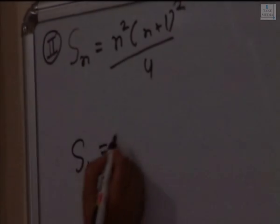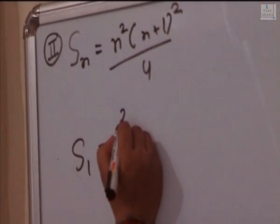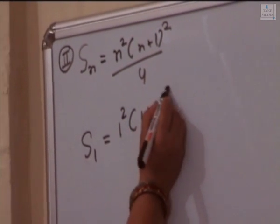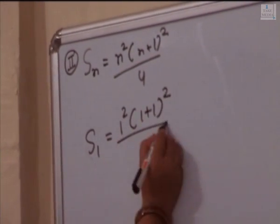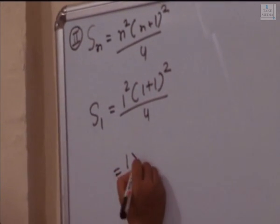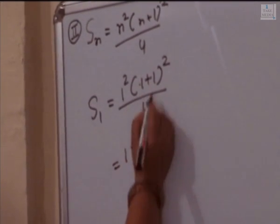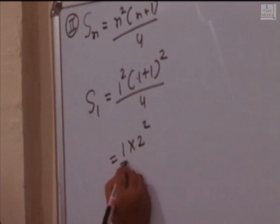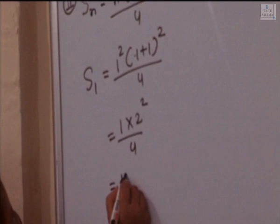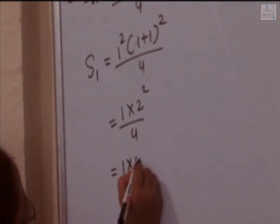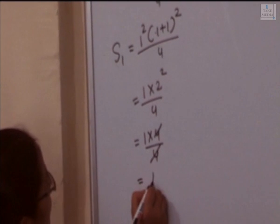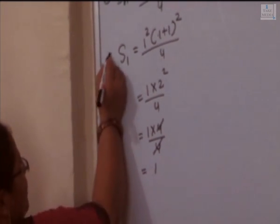For the second formula, calculate S1 with n equal to 1: n²(n+1)² upon 4. So 1 square is 1, 1 plus 1 is 2, 2 square is 4. We get 1 into 4 upon 4. Cancel 4 by 4, the answer is 1. So S1 equal to 1.